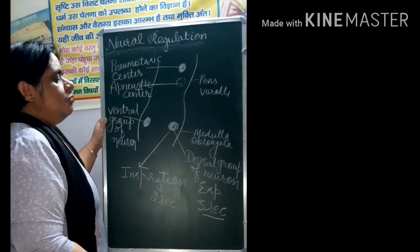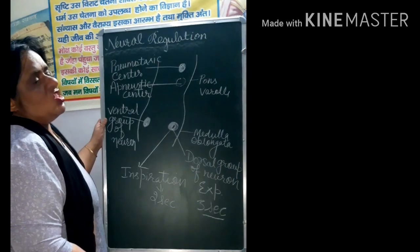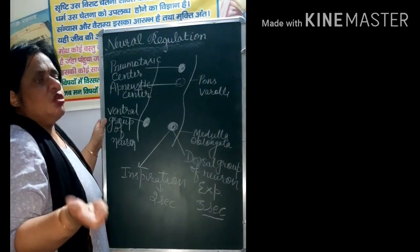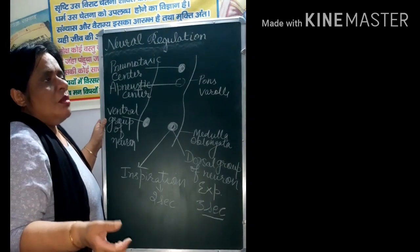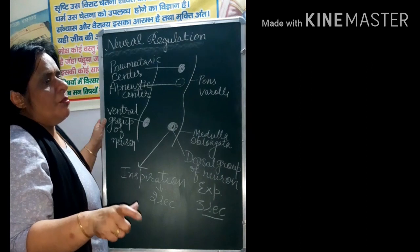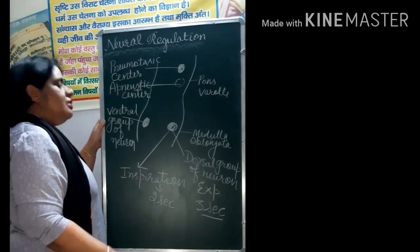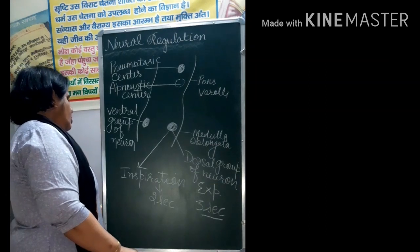Next we will talk about the chemical regulation, chemical regulation which are related to the circulatory system. When we do a heart diagram, then we will complete the chemical regulation. Then, next are the diseases which are related to lung.